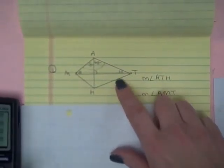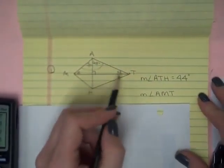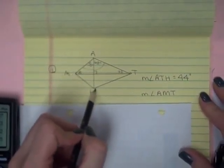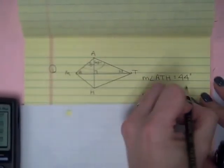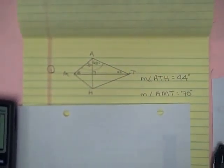So 35 plus 35 will give me angle AMH, and 22 plus 22 will give me angle ATH. Okay, so 22 plus 22 is 44. We've now answered this question. If I'm looking for AMH, then 35 plus 35. And now I found the missing angles.